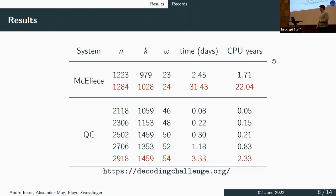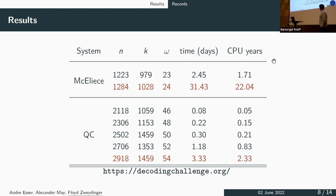With this implementation we were able to break seven different cryptographic challenges publicly available at decodingchallenge.org — no self-made challenges. We broke two challenges in the Goppa-McEliece setting and five in the quasi-cyclic BIKE/HQC setting. In total we spent roughly one month breaking the McEliece challenge and roughly three and a half days on the quasi-cyclic challenge, using around 512 cores.